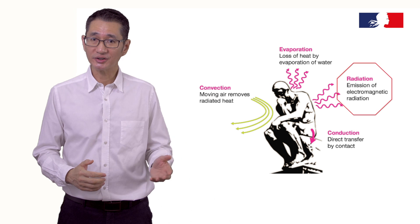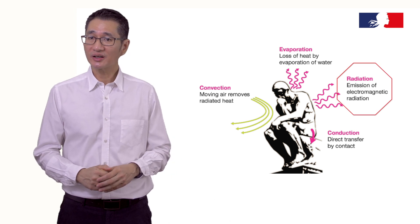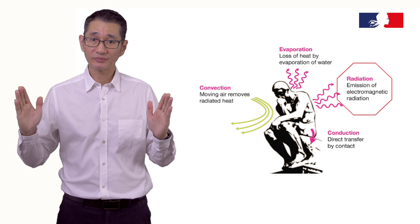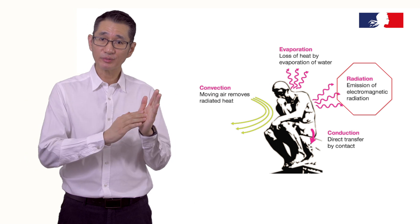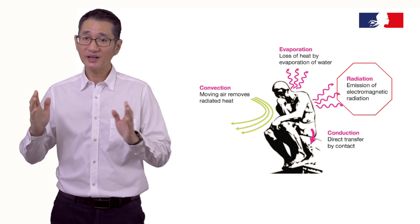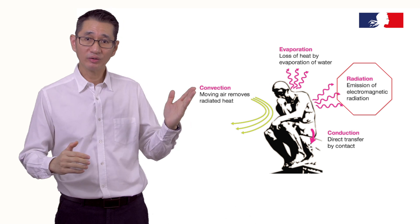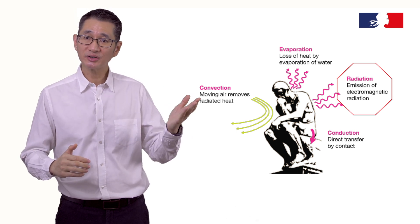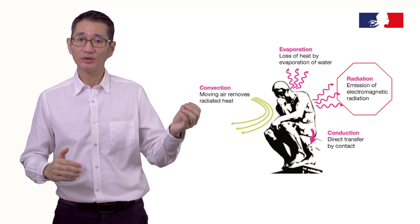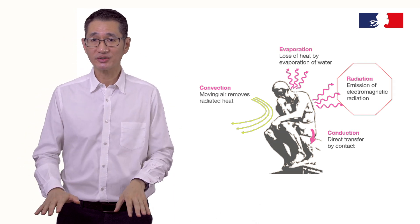Finally, radiation. Radiation occurs between two surfaces of different temperature — a hot surface will radiate to a cold surface. If we are sitting in a room with a hot window, we will feel the radiation of heat from the window to us, even though the air temperature is low.